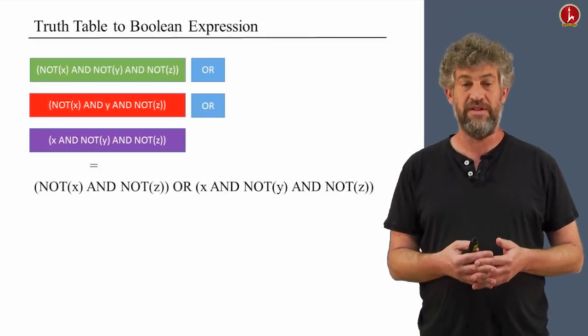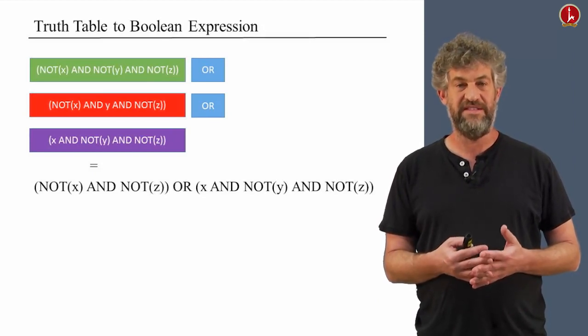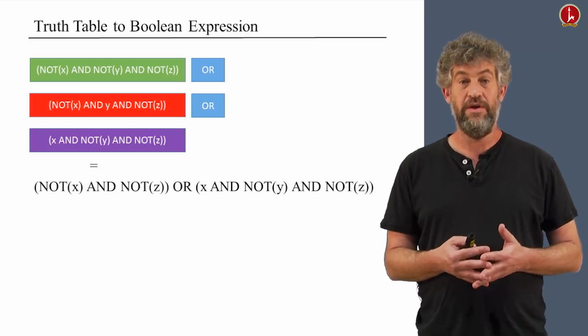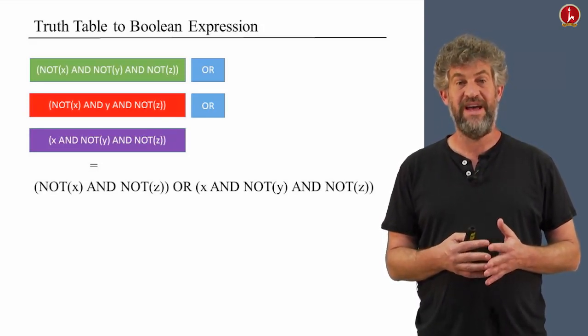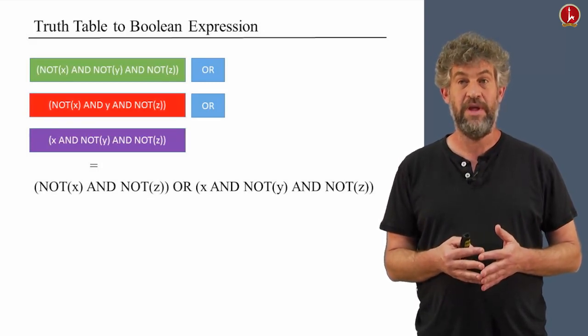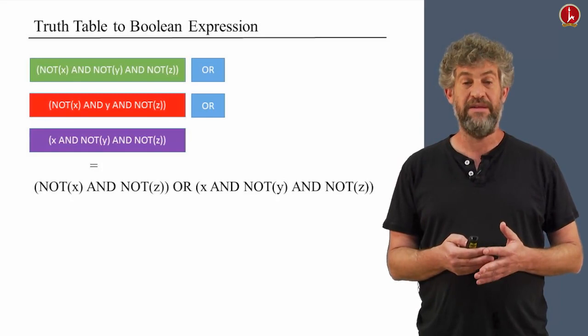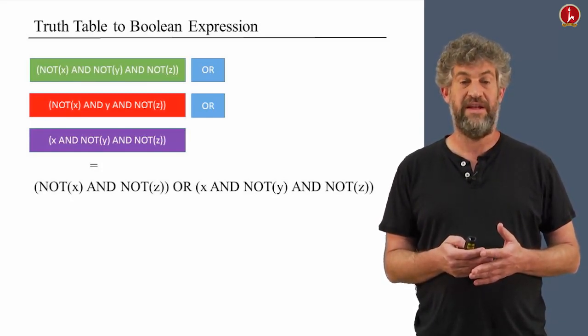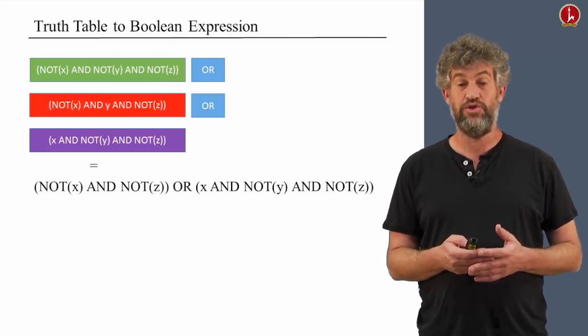For example, if you look at the first two clauses, you can see that one of them is not x and not y and not z, while the other is not x and y and not z. Notice that we have both possibilities for y and exactly the same fixed value for x. So instead of these two clauses, we can combine them into one clause, which does not ask about y, and only asks about not x and not z. So we get an equivalent expression that's slightly shorter.